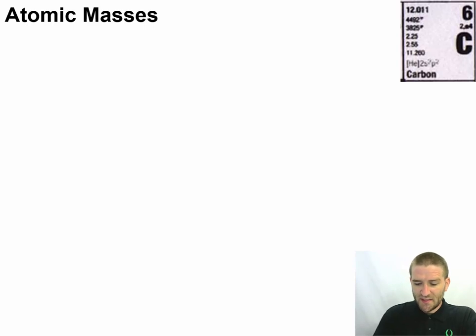Now atomic masses: when we look at the periodic table for carbon, we find that the atomic mass is listed as 12.011. That is the average mass that we're going to find occurring in nature on Earth under normal circumstances.